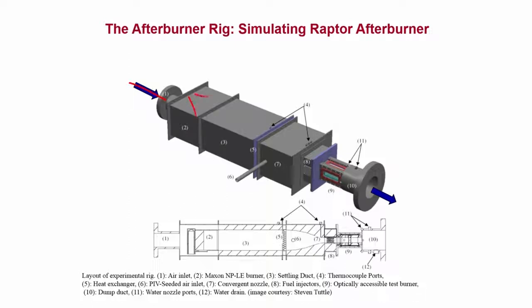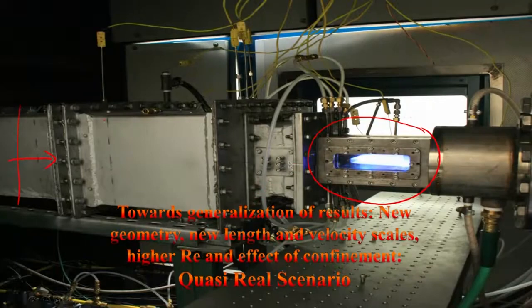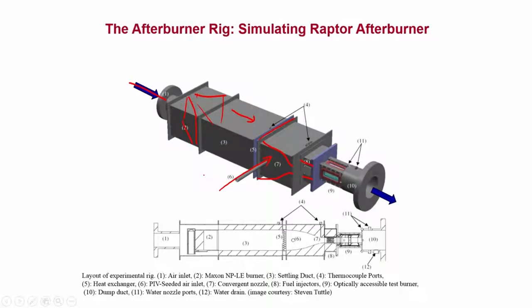The flow comes in here; you have the pre-burner which burns the fuel and creates the vitiated flow, then it passes to the insulated settling section, then we have the heat exchanger. Then we send in the PIV seeds, and this passes to the nozzle. This is the settling section where we inject the fuel. Then this is the nozzle, we have the fuel injectors, and we have the optically accessible test burner — the afterburner.